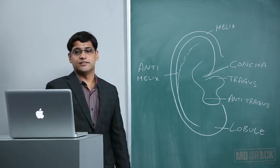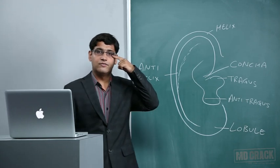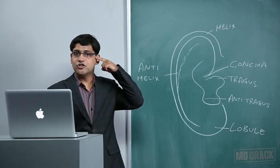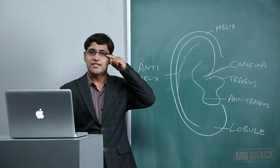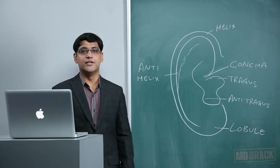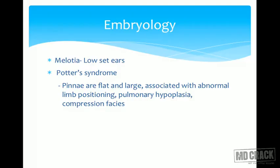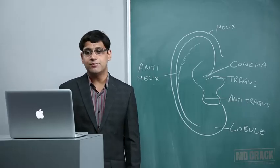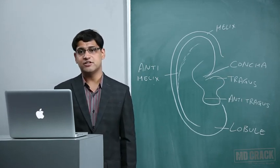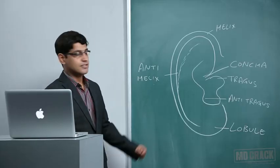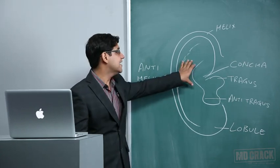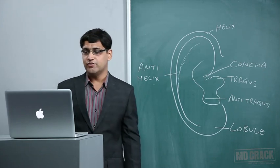Melotia refers to low-set ears. If a line is drawn from the lateral canthus of the eye, it should bisect the pinna - if no part of the pinna is above this line, it is known as melotia. Potter's syndrome involves flat, large pinnae associated with abnormal limb positioning, pulmonary hypoplasia, and compression facies. Wildermuth's ear is opposite to bat ear - the helix is underdeveloped and the anti-helix is prominent.